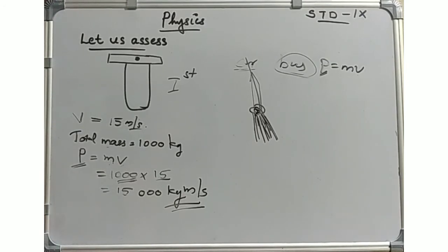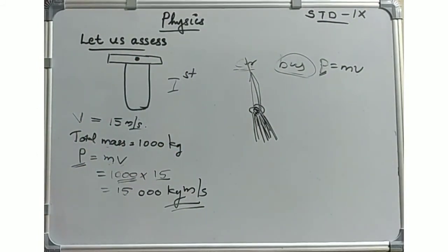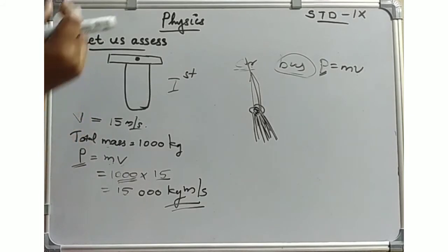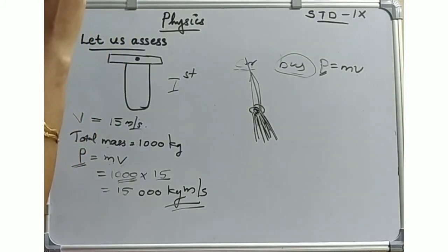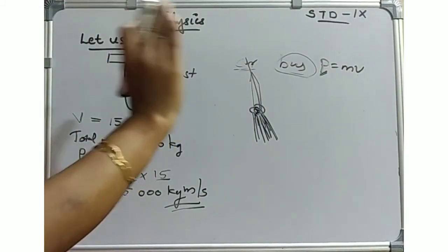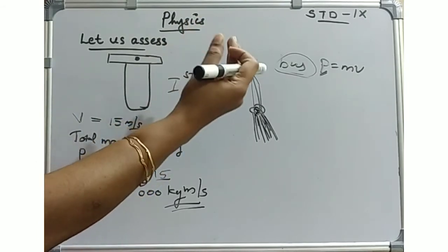When a bullet is fired from a gun, the gun recoils. This is the action and reaction principle from Newton's third law. When the bullet moves in the forward direction, the gun moves in the backward direction — that is the recoil.